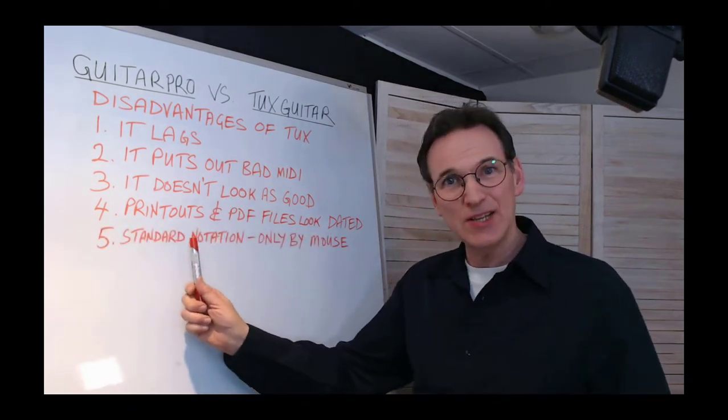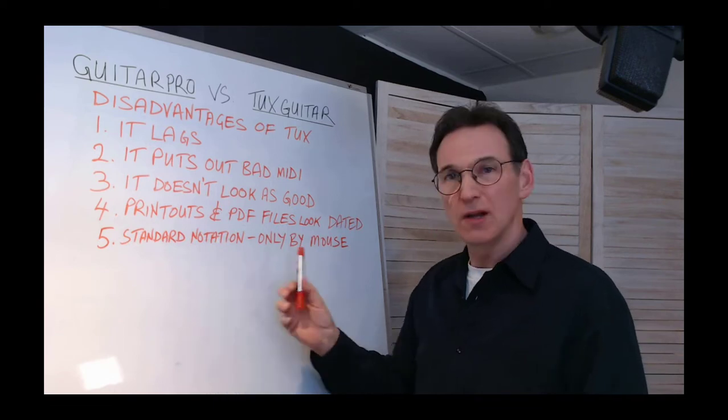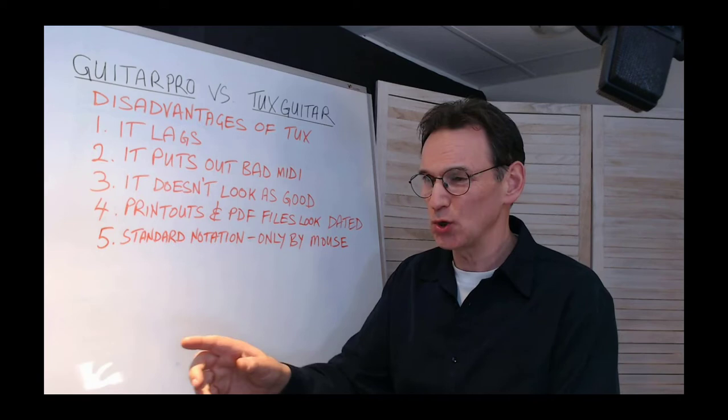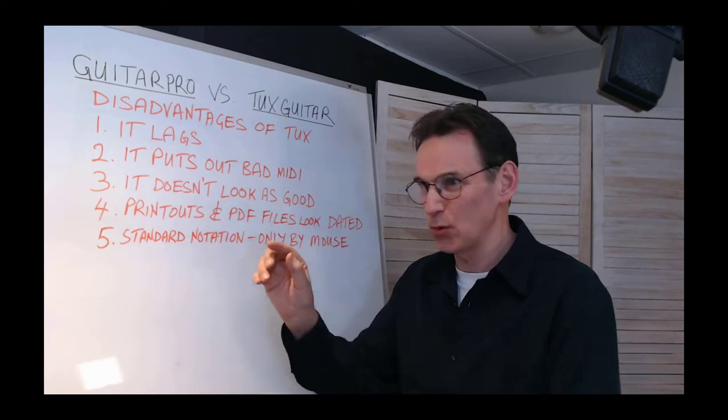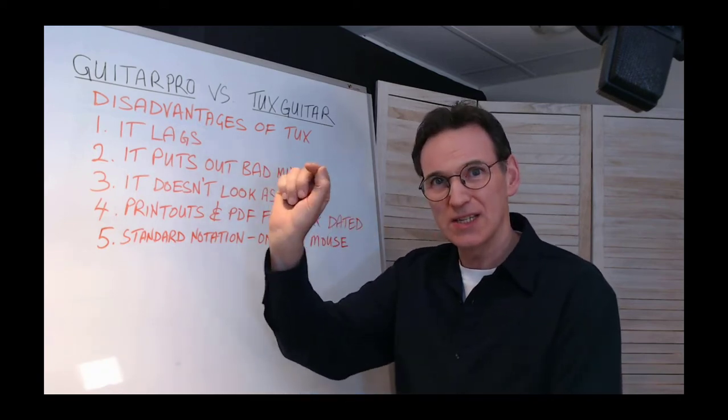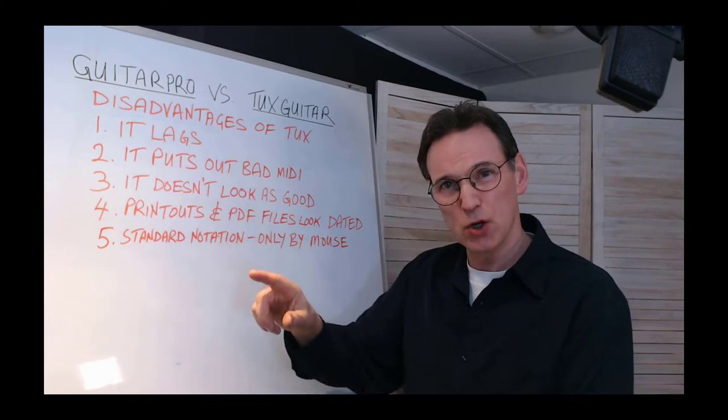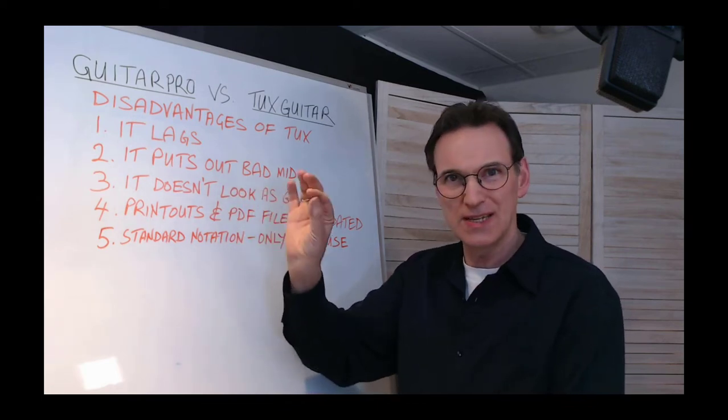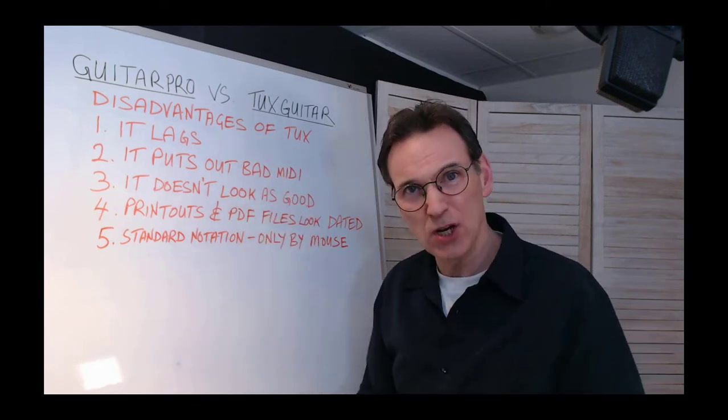The next point is standard notation is only possible by clicking with a mouse using TuxGuitar. Now in GuitarPro, when you're doing standard notation—I have another video on this, by the way—you can actually select a line and you can go up and down with the arrow keys, and you can use the numbers to decide which string the notes will be played on.